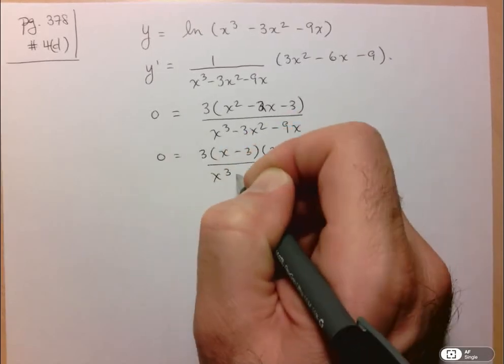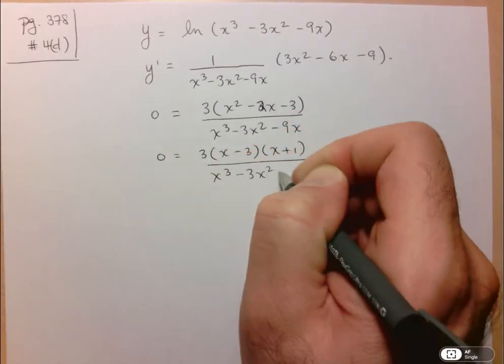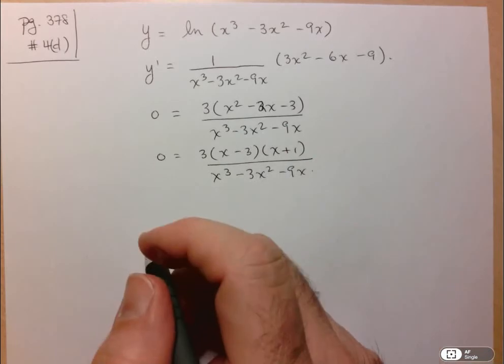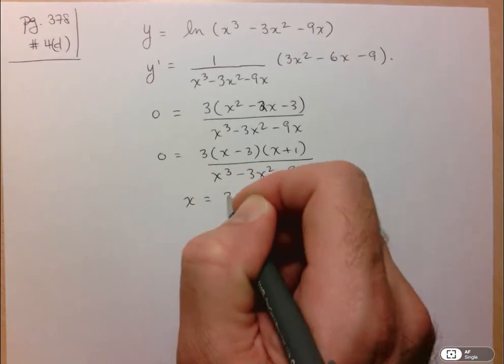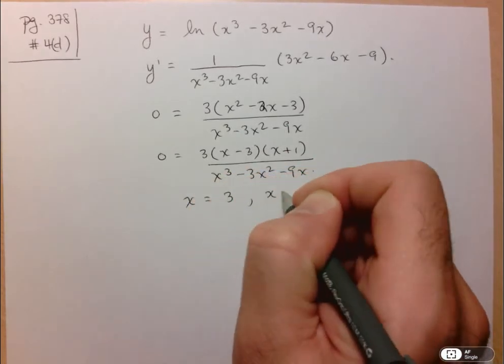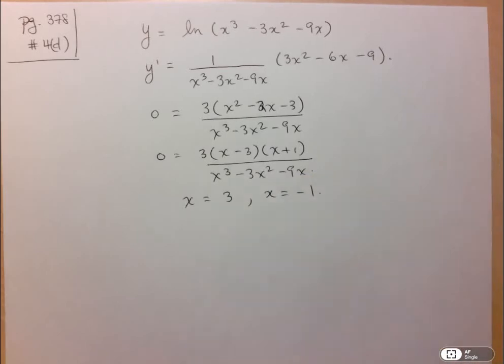So here we can see that the derivative is equal to 0 when x is equal to 3 and x is equal to negative 1.